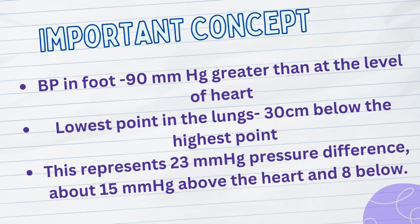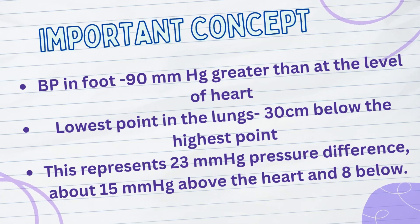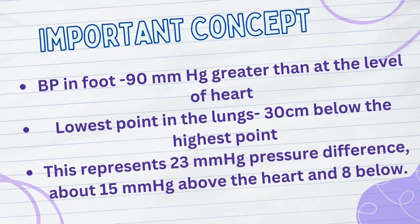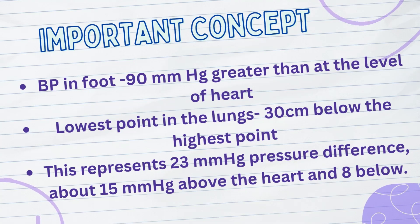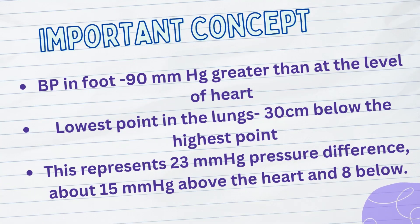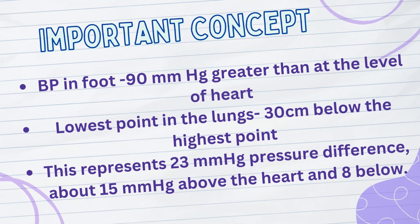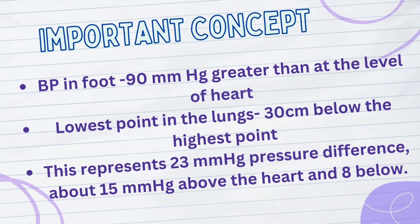The capillary and the alveolar walls are distended by the blood pressure inside them but simultaneously are compressed by the alveolar air pressure on their outsides. Therefore, anytime the lung alveolar air pressure becomes greater than the capillary blood pressure, the capillary is closed and there is no blood flow.